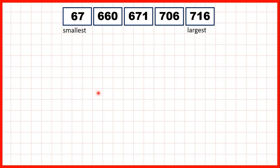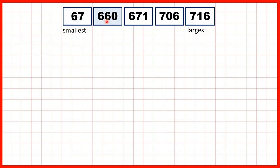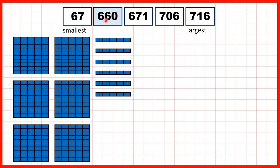So let's take a look at the numbers we compared. In this first set, our smallest number was 67, so that's six tens and seven ones. Then we had 660, so six hundreds and six tens.